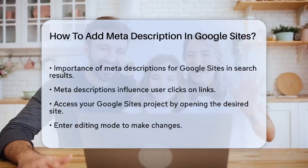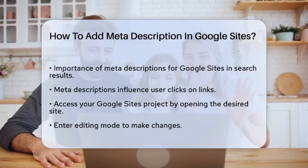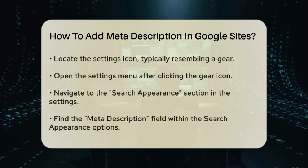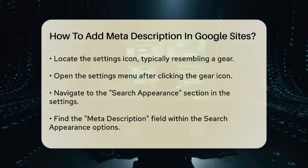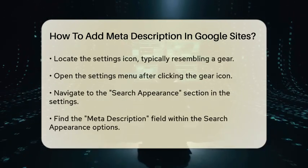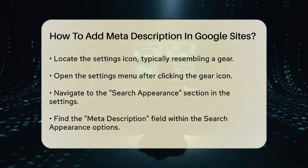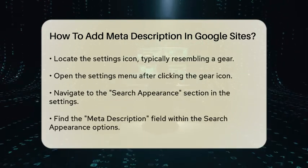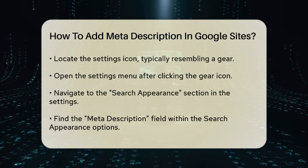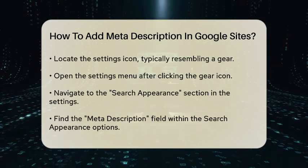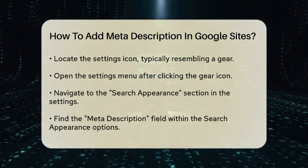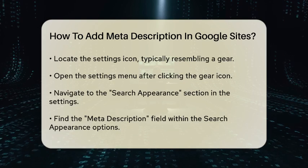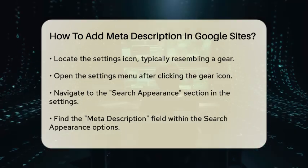First, you need to access your Google Sites project. Open the site you want to edit. Once you are in the editing mode, look for the Settings icon, which usually resembles a gear. Click on this icon to open the Settings menu. In the Settings menu, navigate to the Search Appearance section. This is where you will find options related to how your site appears in search engines.